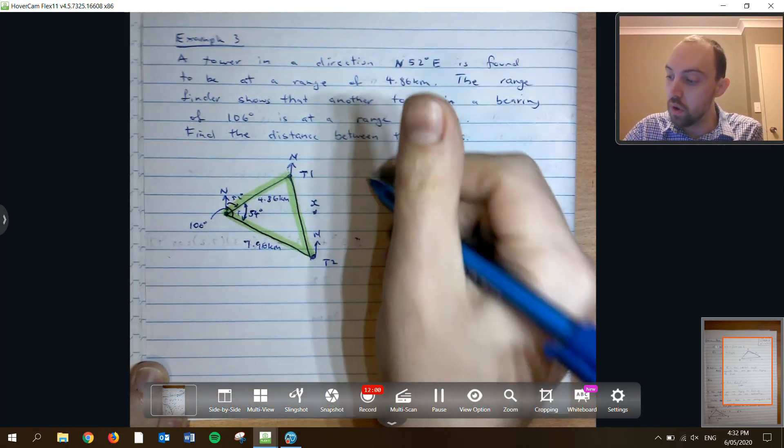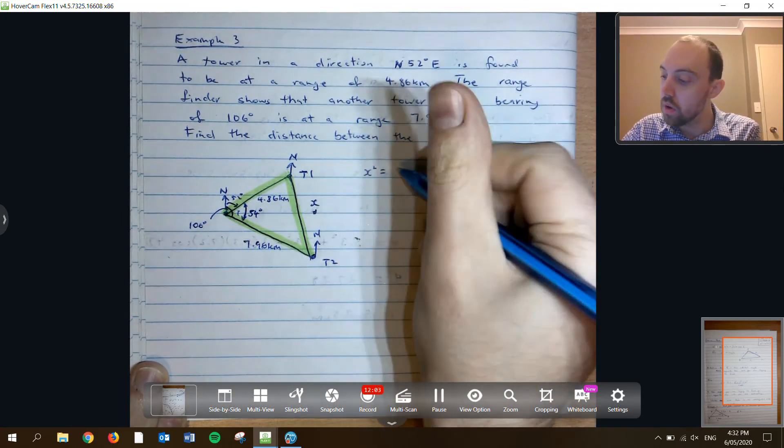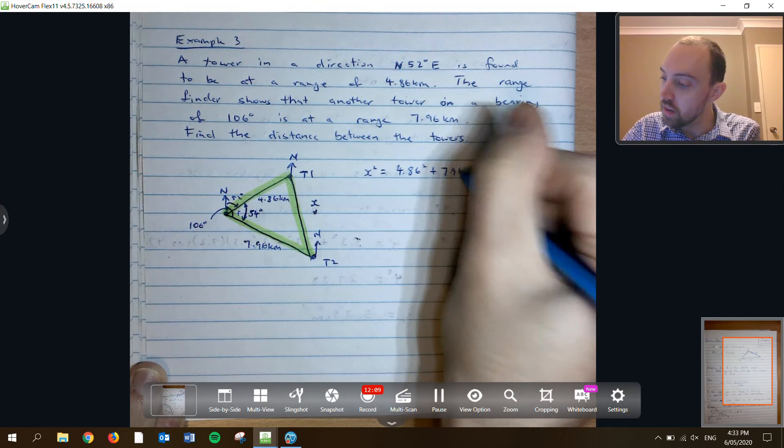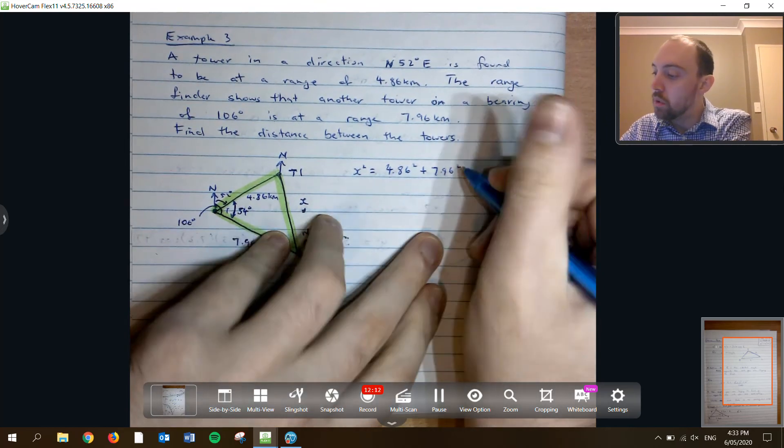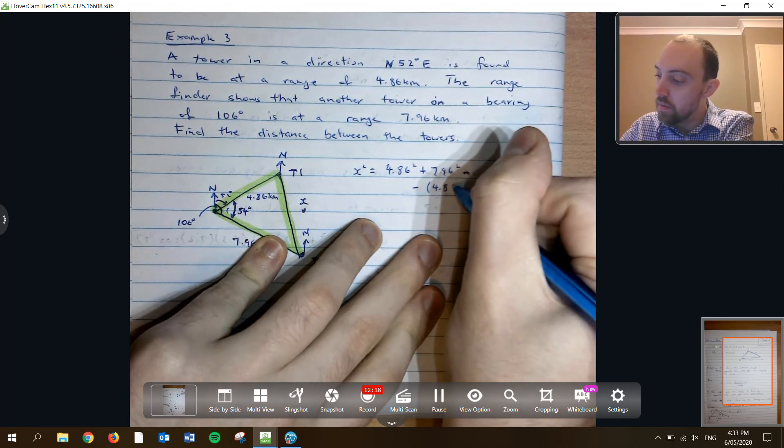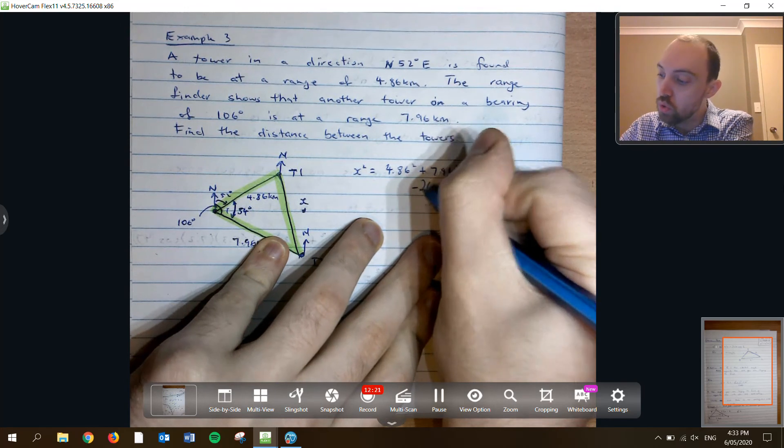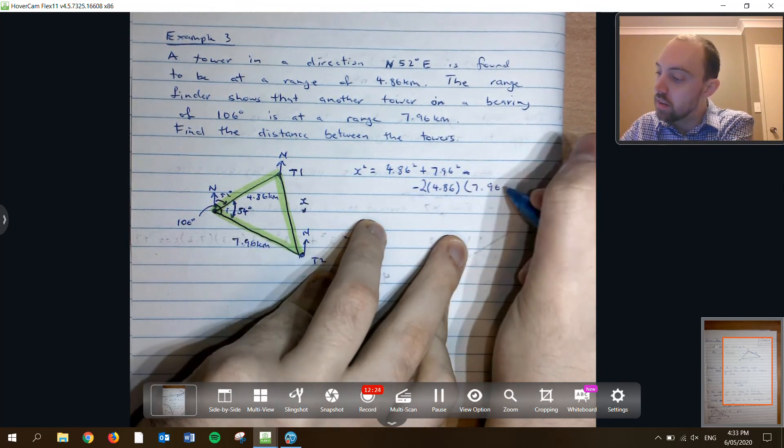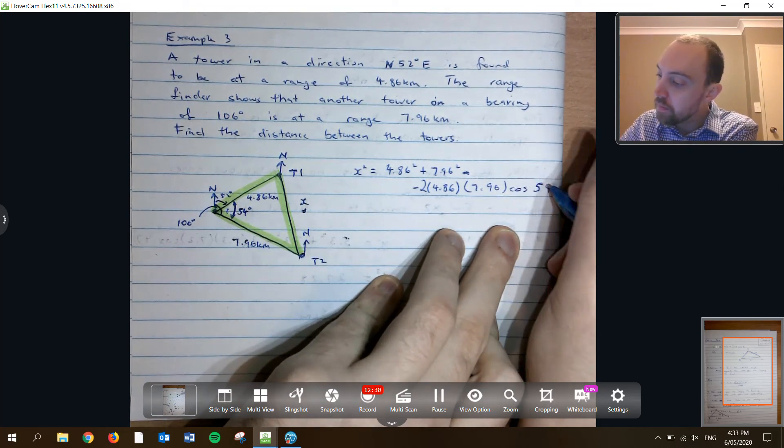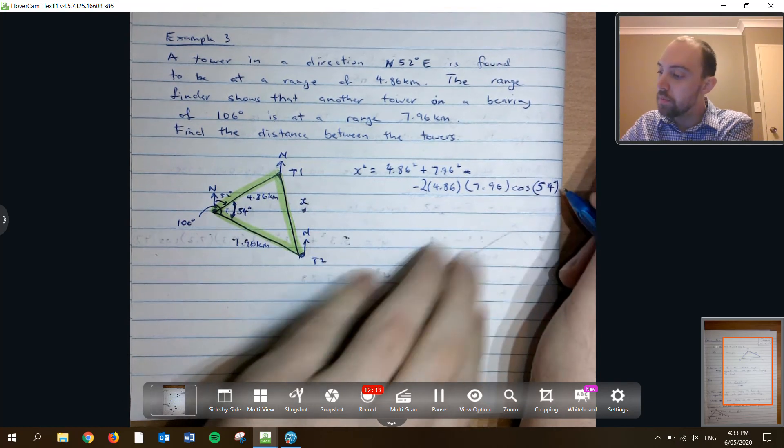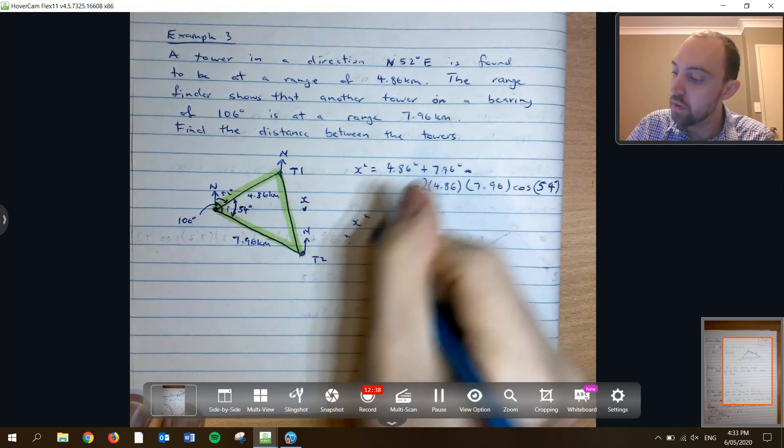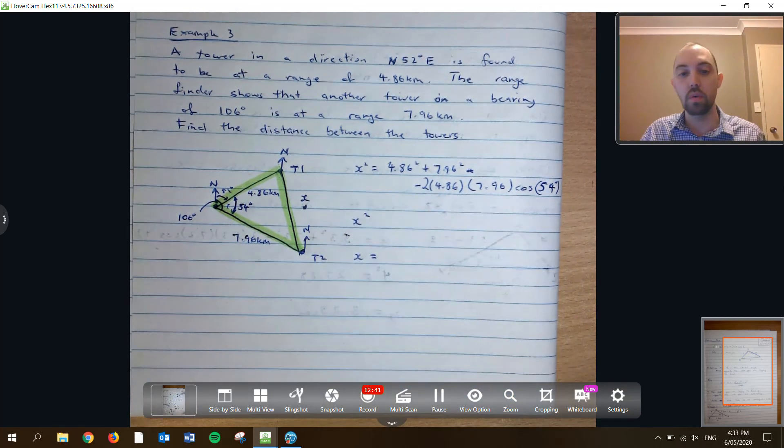So X squared is equal to 4.86 squared plus 7.96 squared, take 2 times 4.86 times 7.96, cos of 54. So we'll get a value for X squared and we'll take the square root to find X.